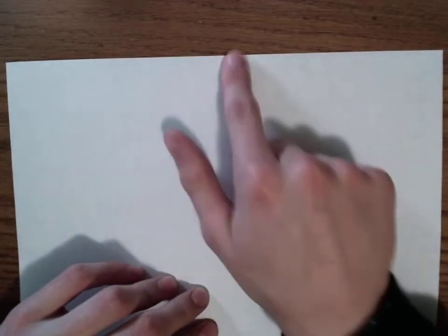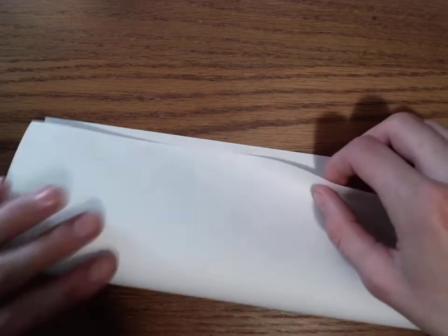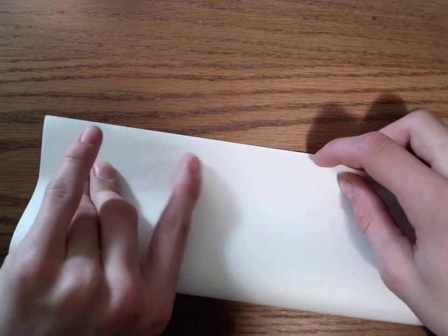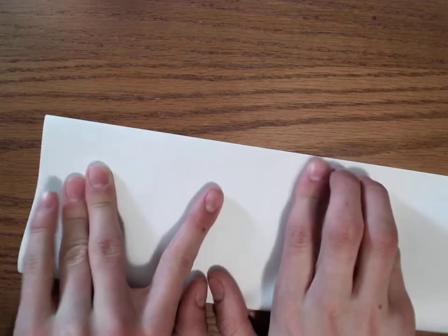But the first step to folding this is to fold the bottom edge to the top edge. We're going to use a rectangular printing paper for this too. So just a valley fold. Valley fold is called valley folds because it looks like a valley.